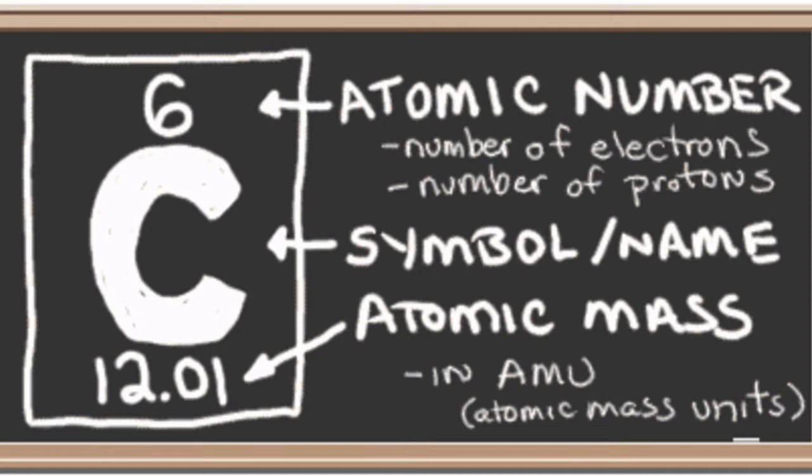we can see that the number on the very top of each element's cubicle is their atomic number. The bolded one or two letters is the symbol of each element. Underneath that is the element's name. And at the very bottom is the element's atomic mass.